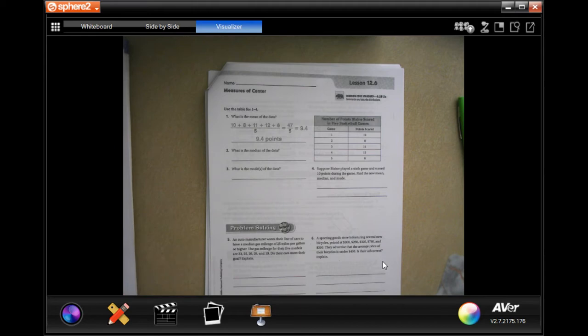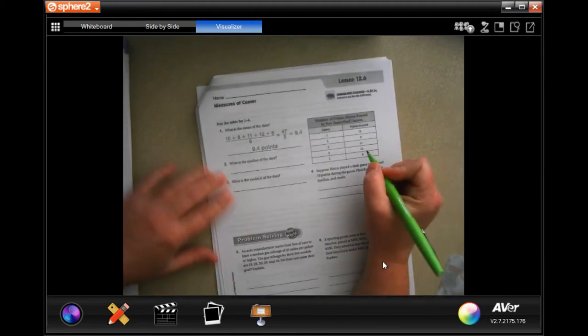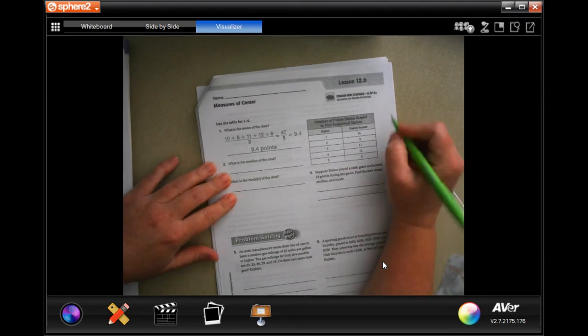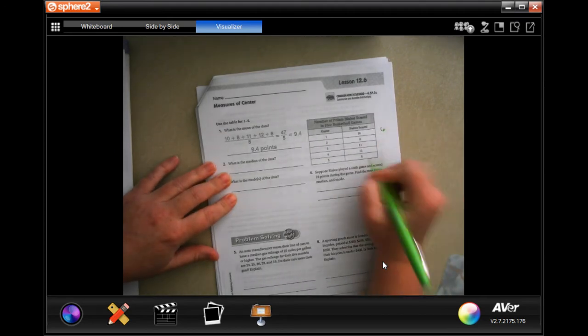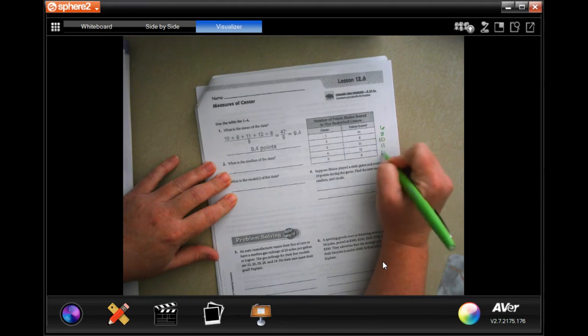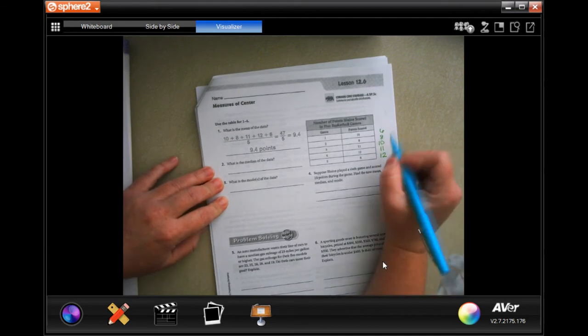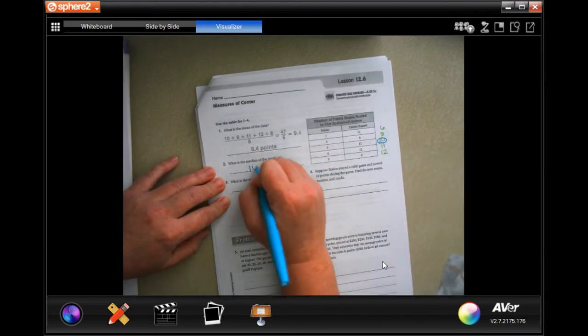So let's find the median of our data. We need to line them up in number order. So 6, 8, 10, 11, and 12. Now the median is going to be the number in the middle, which of 5 of them is the third number. There we go.